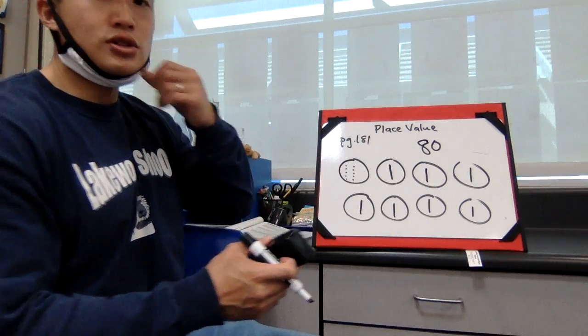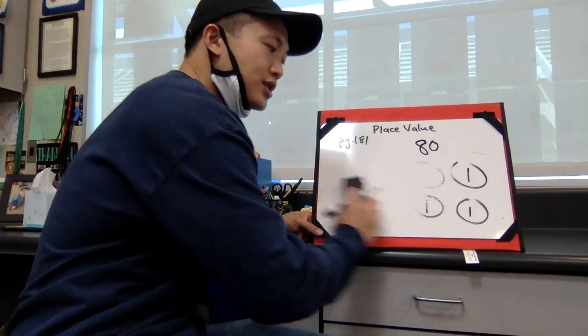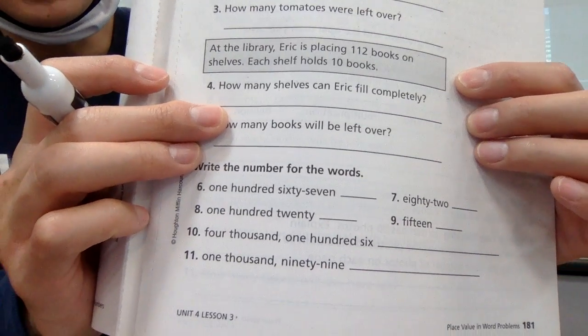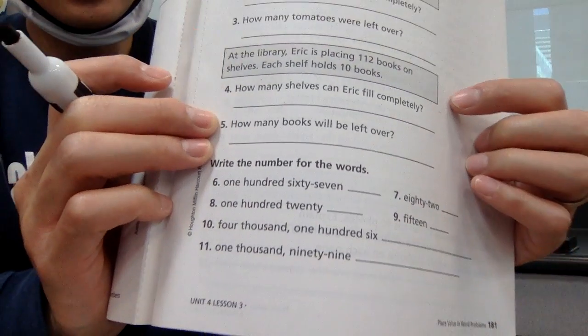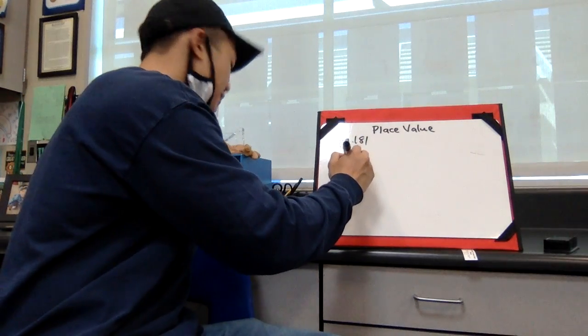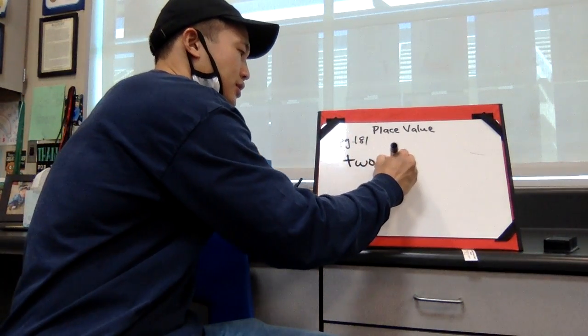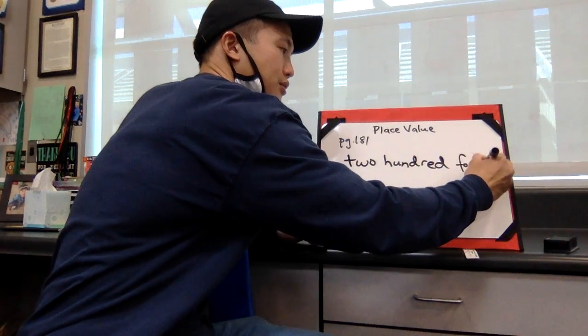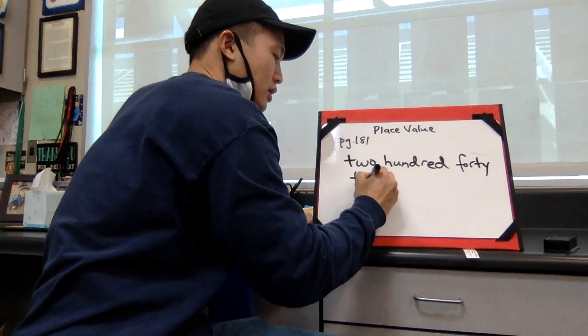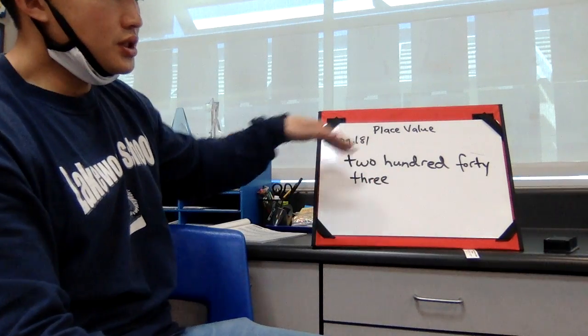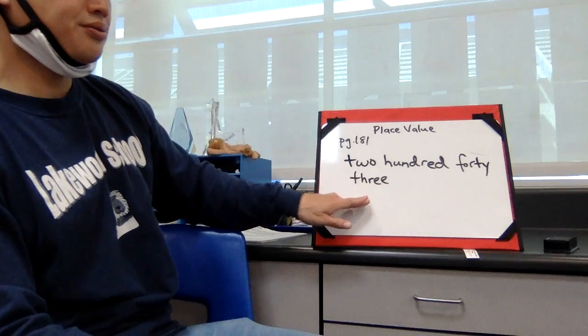So let's talk about the next part. When you go to the bottom of the page, they're going to give you some numbers like this. So we call this word form. They're going to give you a problem in word form and it might look like this: two hundred forty-three. Your job is to write it in number form. So you read it the way that it's said to you.